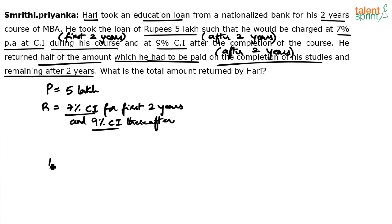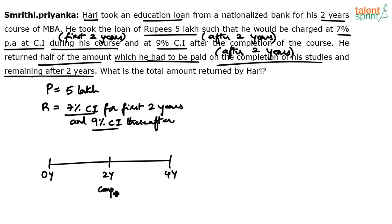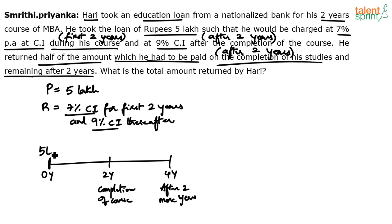Try and understand the timeline. The total timeline is four years. Zero years, two years, four years. At two years is the completion of his course, and four years is after two more years. He borrowed five lakhs at the start. During the first period (0 to 2 years), he will be charged 7% per annum compound interest. During the second period (2 to 4 years), he will be charged 9% per annum compound interest.